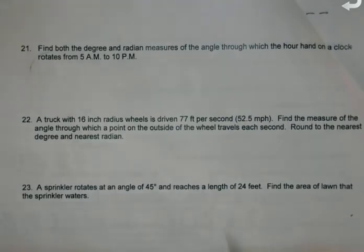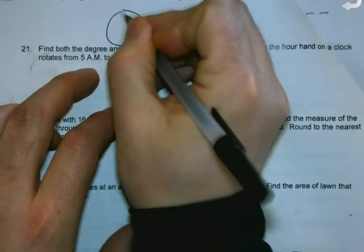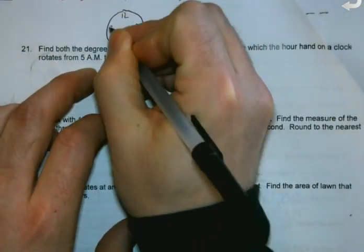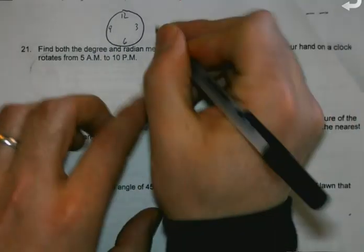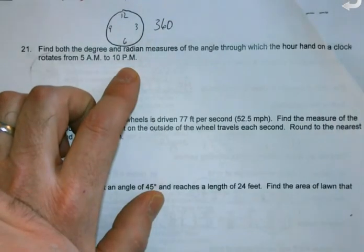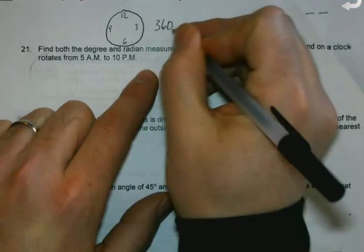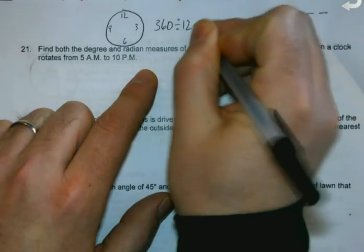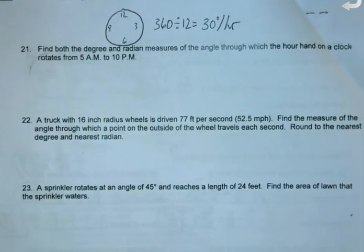So we have a clock. I'll even do some labels on here. A clock, like the one on the wall, is a circle. How many degrees is that all the way around? 360. How many hours are there? 12. So each hour represents a 30-degree angle.